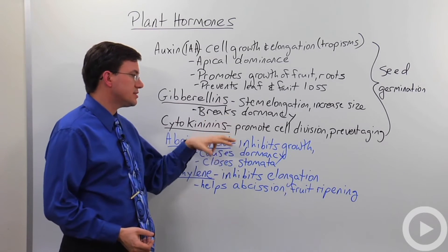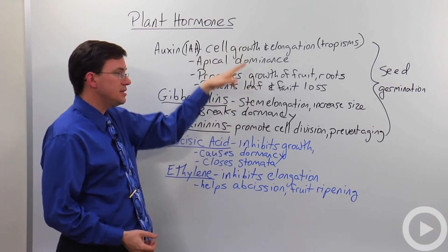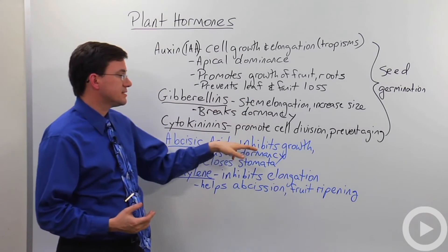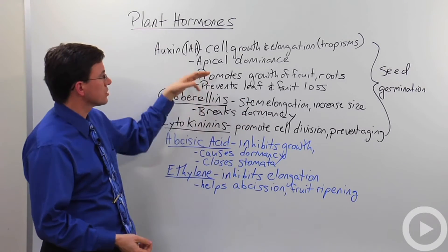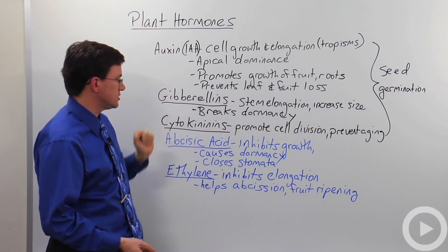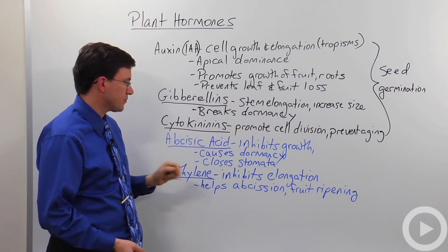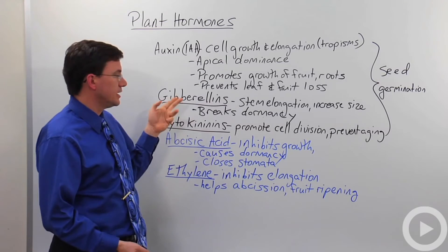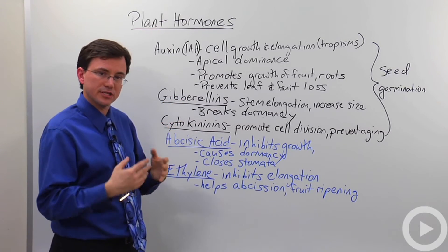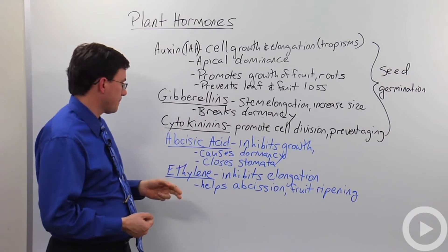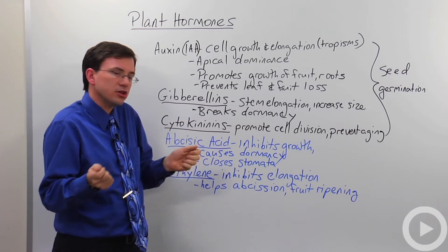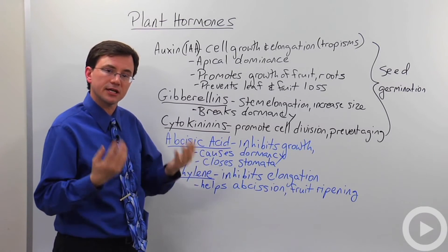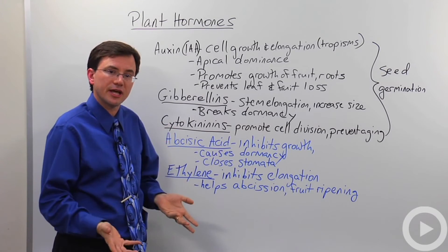Abscisic acid, unlike those three, is not a promoter of cell growth. Abscisic acid tends to inhibit growth and often works in opposition to auxins and gibberellins. It can cause the dormancy that helps plants slow down for winter, and it's involved in helping close the stomata — the openings that plants use to allow carbon dioxide in and oxygen out of the plant.